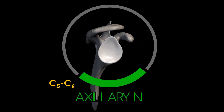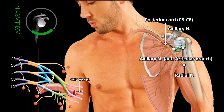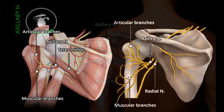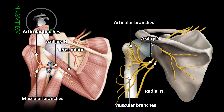The axillary nerve originates from the posterior cord of the brachial plexus, formed by nerve roots C5 and C6. It descends along the posterior aspect of the shoulder, running over the surface of the subscapularis muscle. As it continues its course, the axillary nerve becomes posterior, wrapping around the surgical neck of the humerus, just below the shoulder joint, then proceeding along the medial side of the humerus. Before becoming entirely posterior, the axillary nerve may give off an anterior articular branch involved in innervating certain parts of the shoulder joint. When the nerve reaches its most posterior segment, it bifurcates, sending off branches to innervate the deltoid and teres minor muscles, as well as issuing a posterior articular branch.